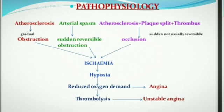Decreased oxygen to the tissue leads to reduced oxygen supply versus demand imbalance, resulting in angina. This process can also lead to thrombolysis and unstable angina. This completes the pathophysiology of angina pectoris.